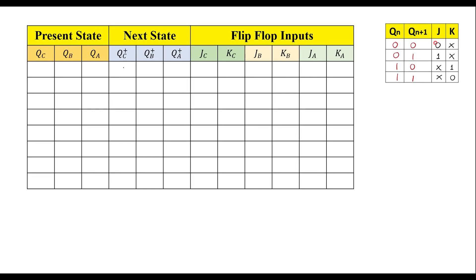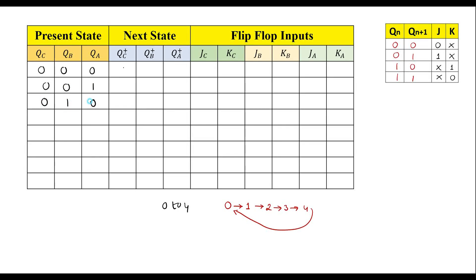This is the excitation table for the JK flip-flop and the counter. We need to count 0 to 4. Let me assume QC is the MSB and QA is the LSB. Writing all possible input combinations: 0 0 0, 0 0 1, 0 1 0, 0 1 1, 1 0 0, 1 0 1, 1 1 0, 1 1 1 — representing the decimal values 0 through 7.